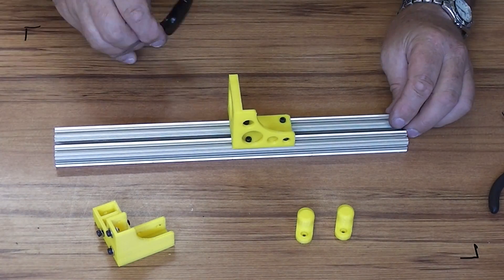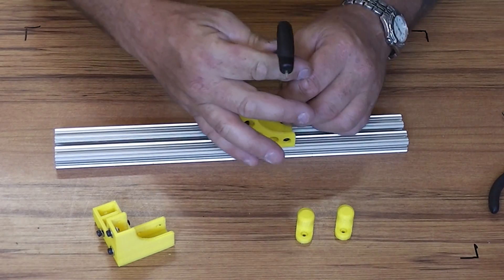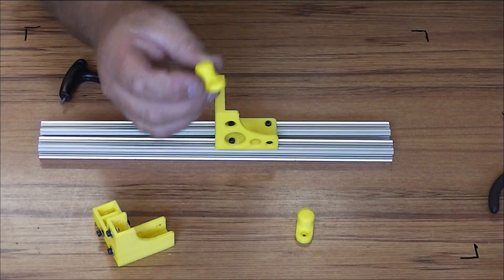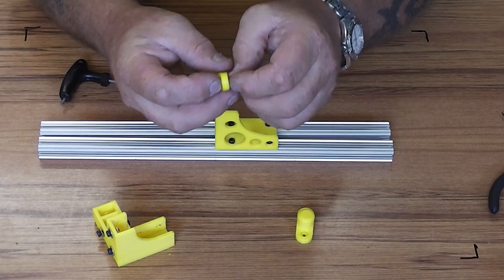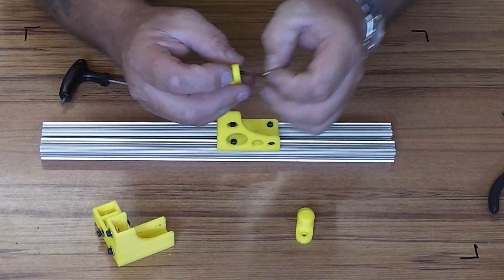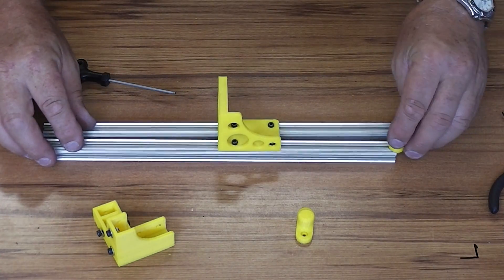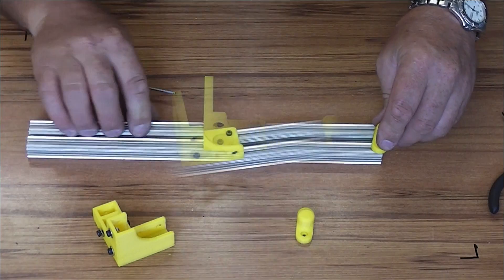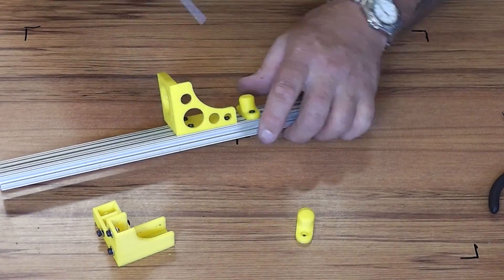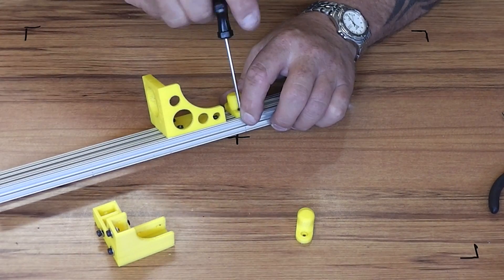Next up are the bar ends which just use the 8mm M3 machine screws. That slides on in the usual way and gets mapped up in the approximate position.